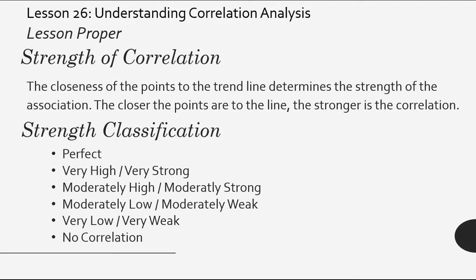What is the strength of the correlation? The strength of the correlation is the closeness of the points to the trendline determines the strength of the association. The closer the points are to the line, the stronger is the correlation. So the points regarding the trendline need to be closer to the trendline. Why? That will determine the strength of a correlation.